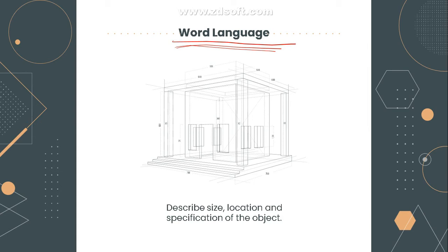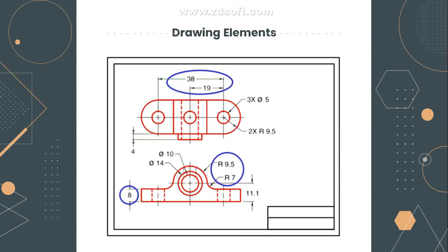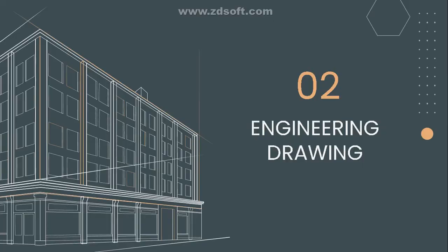That is the difference between the graphics language and the word language. In this engineering drawing, all the elements that are colored — like this blue oblong or ellipse, this figure, even the hidden lines, the circles — these are the graphics. Whereas the ones in black, all of the texts found in this engineering drawing are parts of the word language — all the letterings, numbers, ratios, and dimensions.